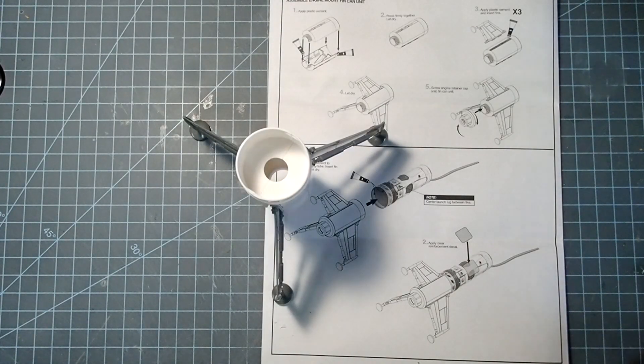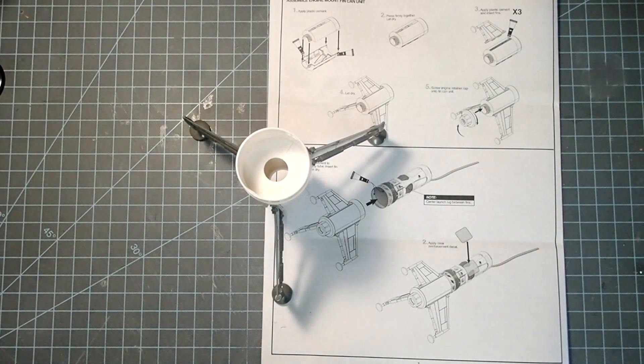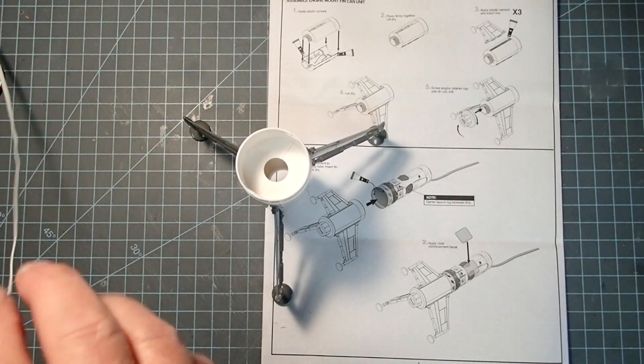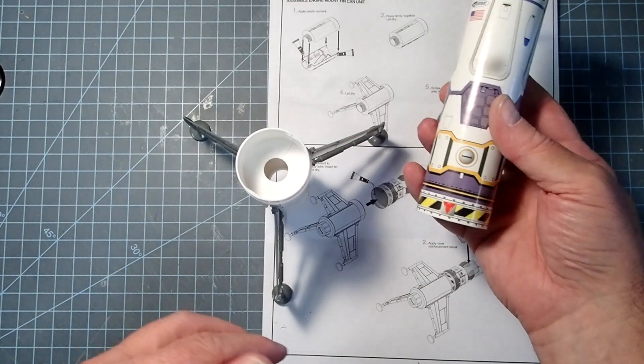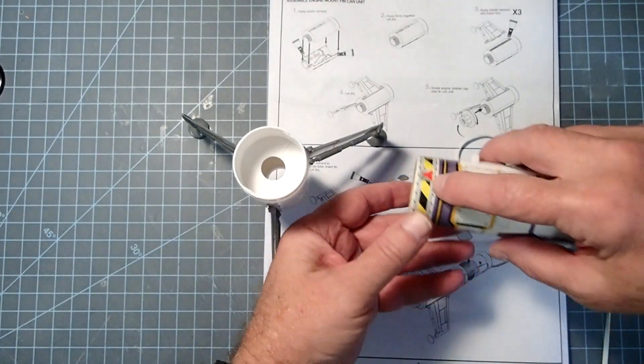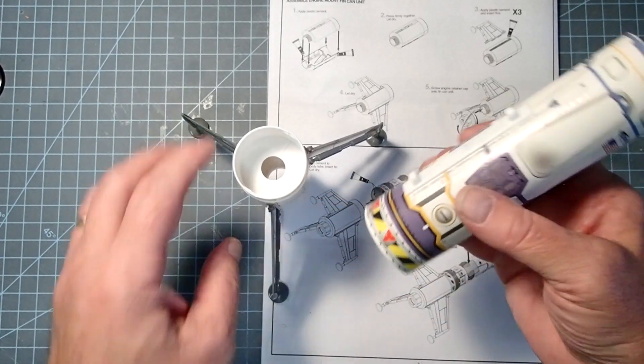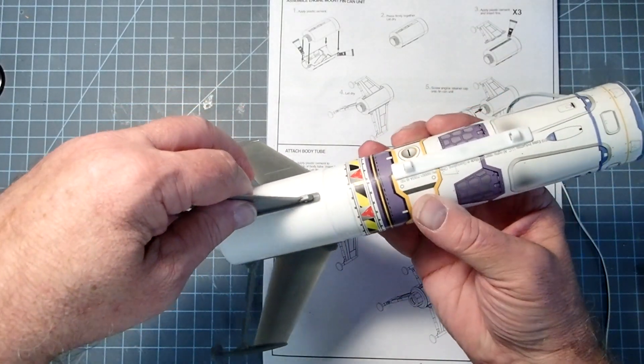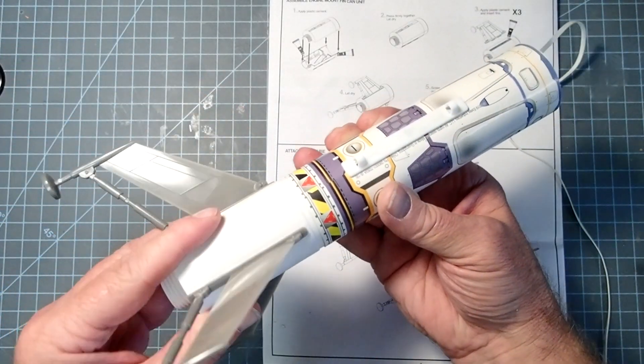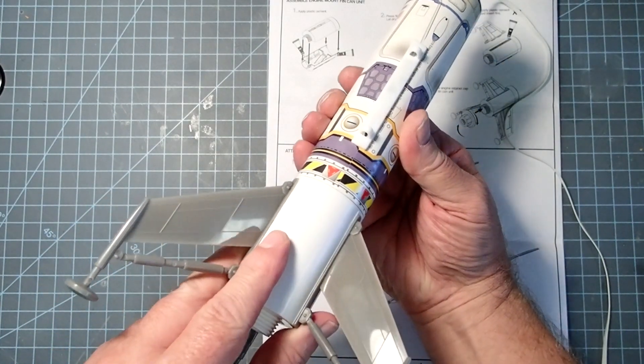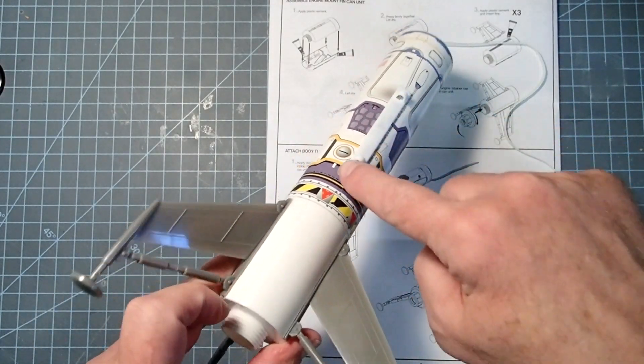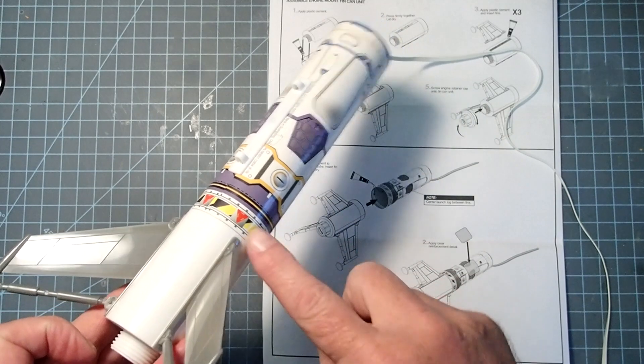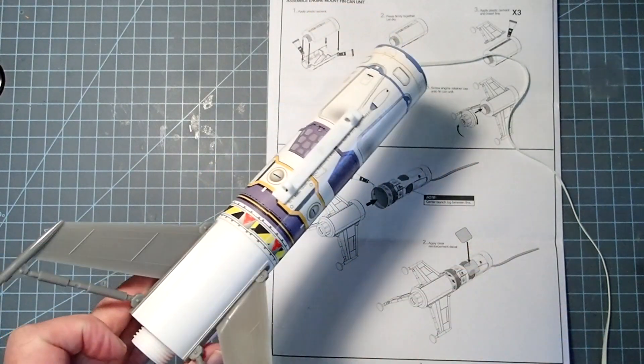The glue is dry on my fins, and so now we're ready to attach the body tube to this. Now make sure you get it going the right way. So the caution pattern here should be going on this. I'm just dry fitting this right now to make sure it all fits. So you've got that on there, and the launch lug here should be in between two of the fins. You don't want it in line with the fin or it won't fit on the launch pad.